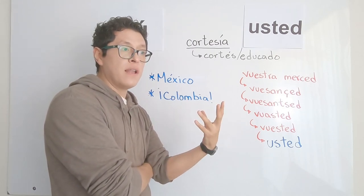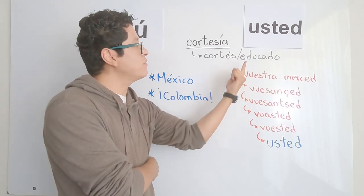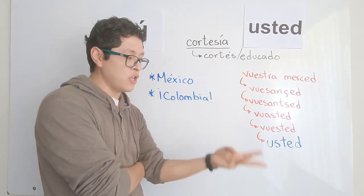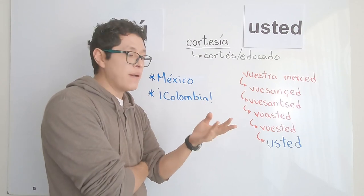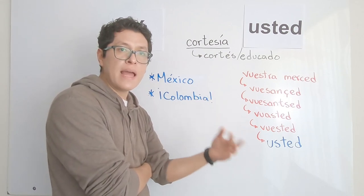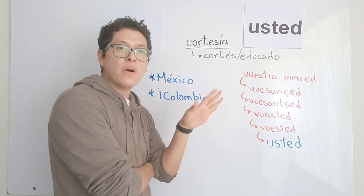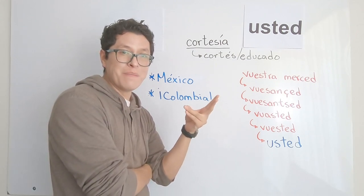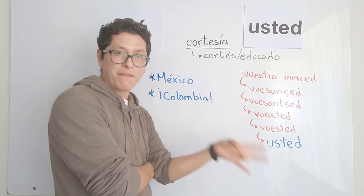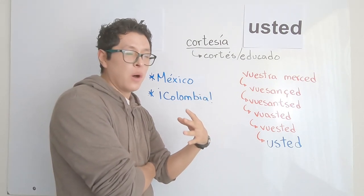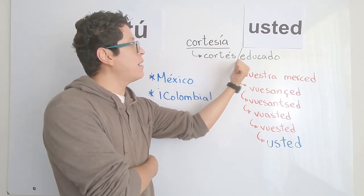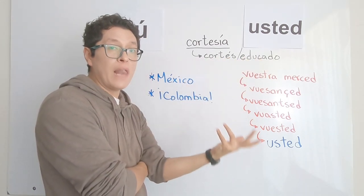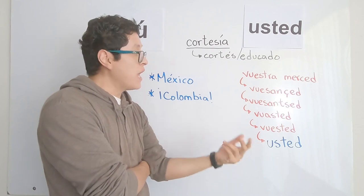Of course there are other ways to be polite — educado — in Spanish beyond these pronouns. We have señor, señora, señorita, and the magical words gracias and por favor. All of those are ways to become educado, to be cortés, to be polite in Spanish.